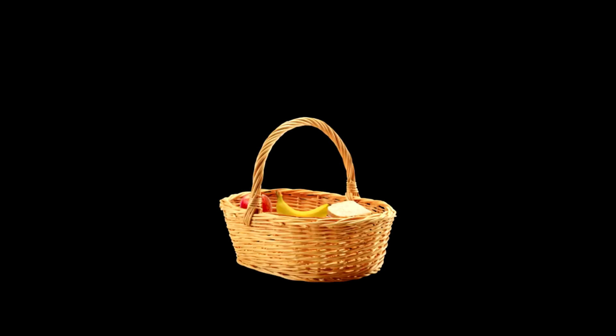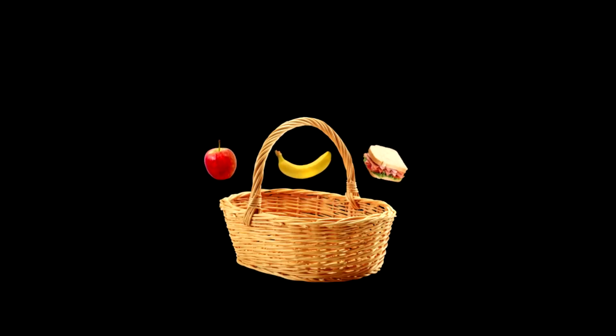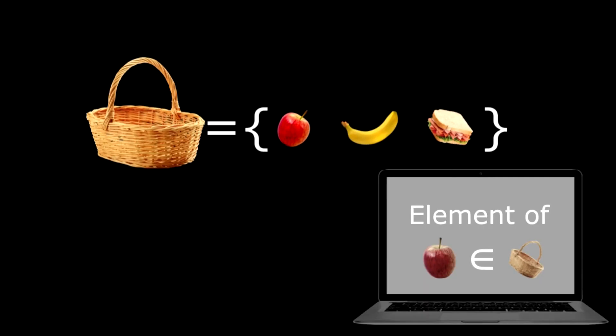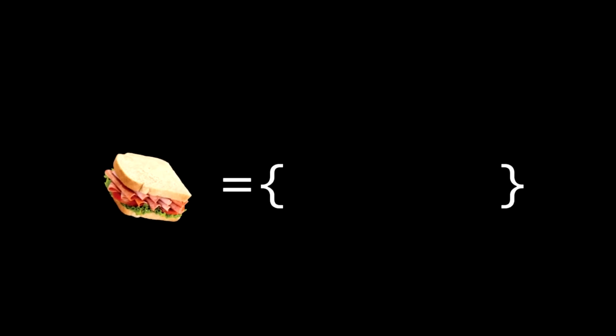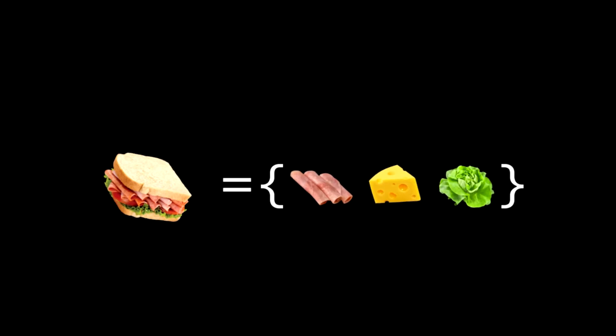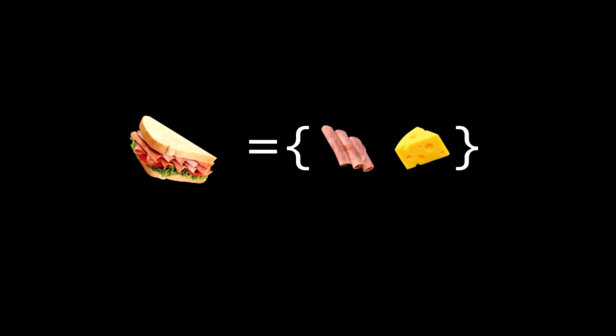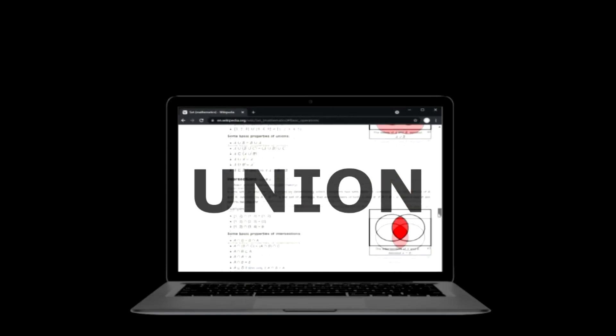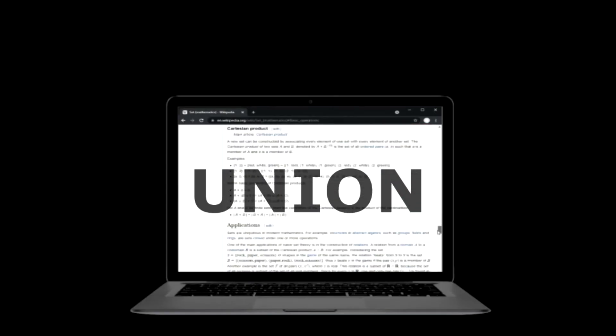In order to get to the proof of Goodstein's theorem, we need a bit of understanding of sets, natural numbers, and ordinals. Think of a set as a collection of things. For example, imagine a picnic basket — our set — that contains an apple, banana, and a sandwich. These items are the elements of our picnic basket. These elements themselves could be sets; for example, the sandwich could be a set containing ham, cheese, and lettuce. There are many ways to manipulate sets. One useful operation is the union of sets, where we combine the elements of multiple sets to create a new one.